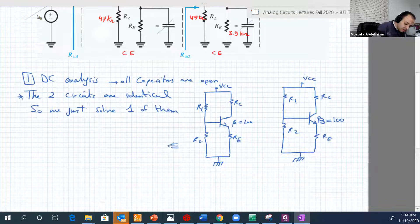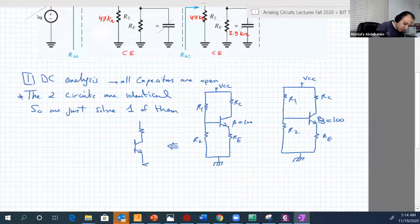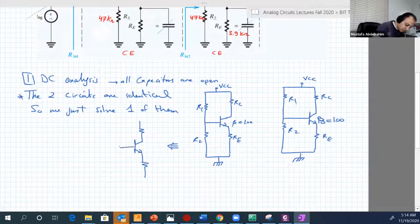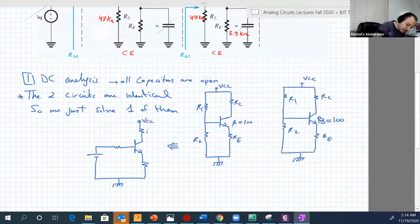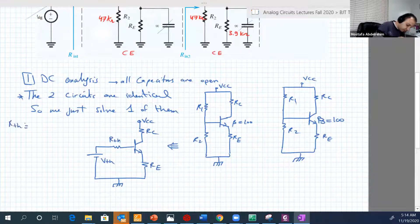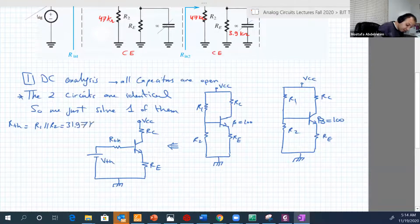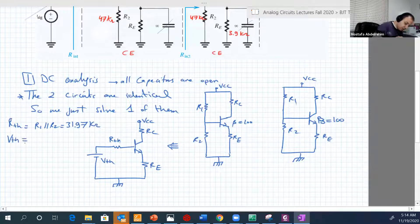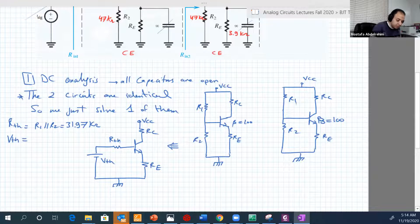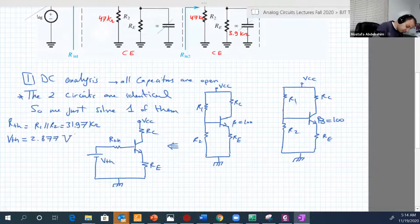Good. And we learned how to do that. We usually make Thevenin, the Thevenin equivalent of the voltage divider. VCC here is RC, RE, RTH, VTH. RTH will be R1 parallel R2, and this will be 31.97 kilohms. And VTH will be the voltage across R2, so it will be 2.877 volts. So in that loop here, we can write its equation.